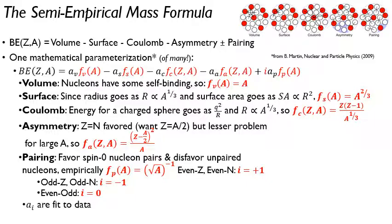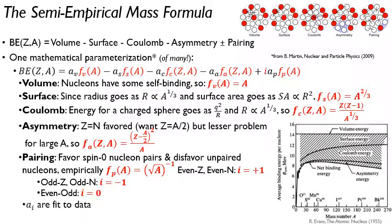And then what you have is these parameters here, these little a-sub-whatevers, are fit to your data. So you see that's what makes it semi-empirical. There's at least a hand-wavy theory to go along with this, but then you fit it to data in the end.